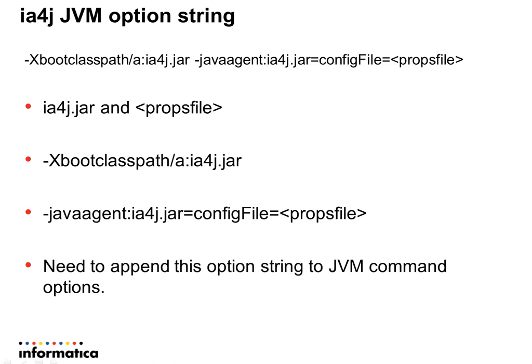A typical IA4J option string contains two JVM options. The first one is XBootClassPath. This option helps load the agent jar before loading the service classes. One thing to notice is about the path of the jar — when the jar file is not prefixed by any path, the service process looks for IA4J at the InfoHome Tomcat bin directory. Otherwise, the absolute jar path specified in the option will be verified for the jar location.